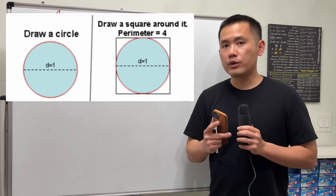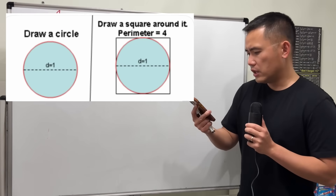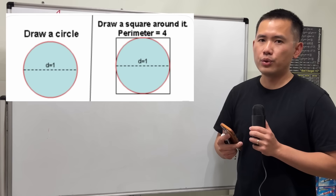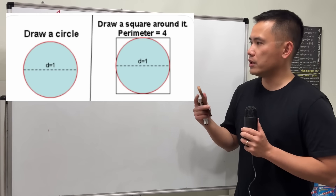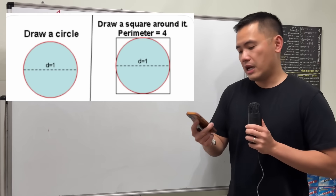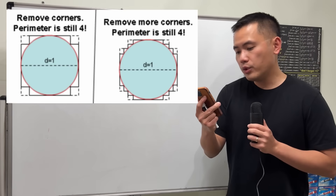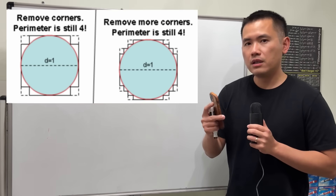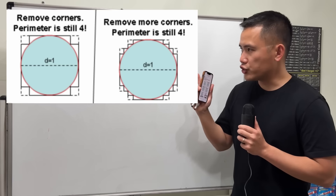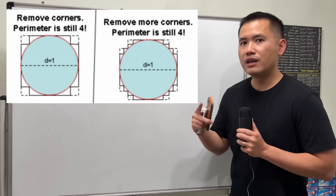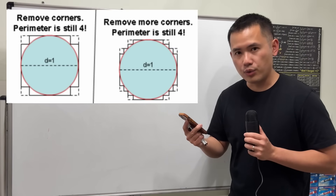And then we are going to draw a square around the circle. So the perimeter of the square is just equal to 4, because we have one on each side. And then we are going to remove the corners. Notice the shape — we'll still have perimeter equal to 4.